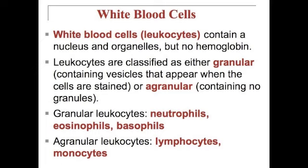Moving on to white blood cells: unlike red blood cells, white blood cells — also known as leukocytes — contain a nucleus, organelles, and no hemoglobin. Leukocytes are classified as granular (they contain vesicles that appear when the cells are stained) or agranular (they contain no granules). Granular leukocytes are neutrophils, eosinophils, and basophils. Agranular leukocytes are lymphocytes and monocytes.